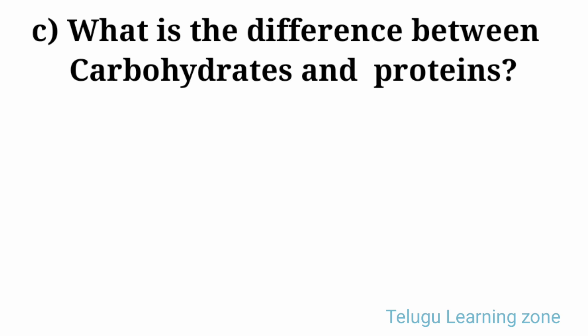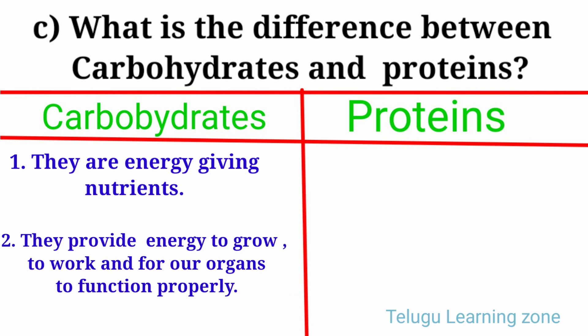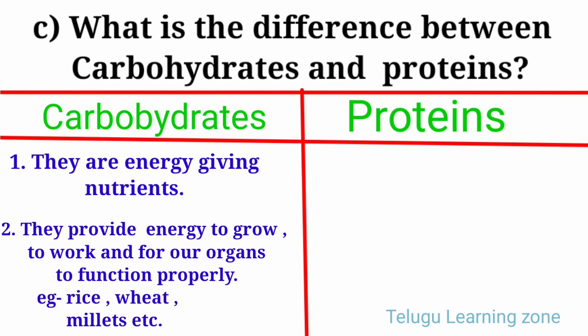Question C: What is the difference between carbohydrates and proteins? Carbohydrates: They are energy giving nutrients. They provide energy to grow, to work and for our organs to function properly. Examples: rice, wheat, millets, etc.